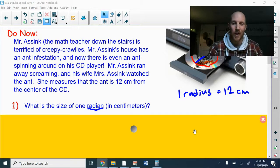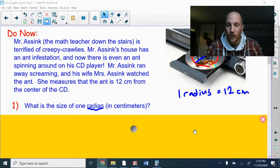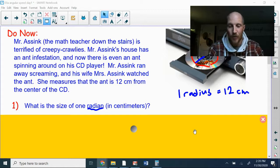jazz, and ah, an ant! He runs off terrified, and his wife comes in to see what is the matter and just sees this ant having fun on the CD and starts watching. So she measures that the ant is 12 centimeters from the center of the CD, which is where the spinning is centered.